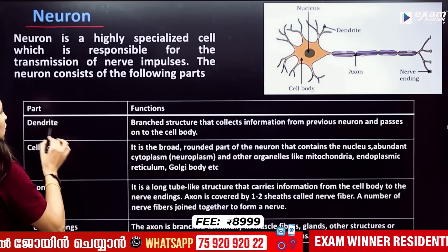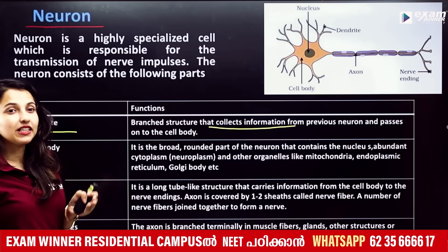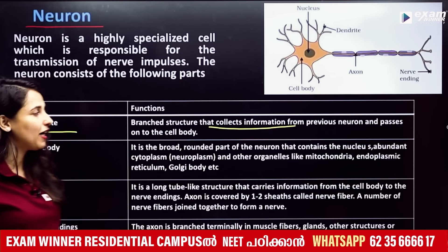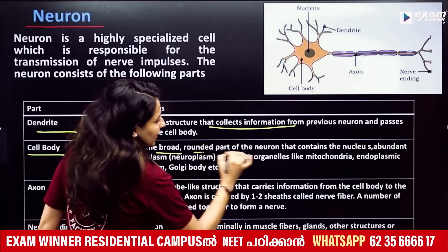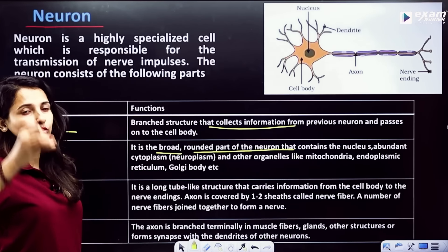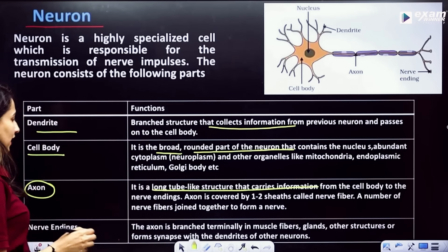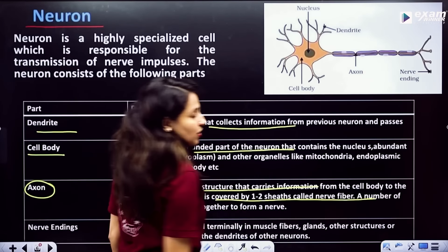The dendrite is the branched structure of the neuron. The cell body is the broad, round part of the neuron containing the nucleus, cytoplasm, and cell organelles. The axon is the long fiber from the cell body. The axon is covered by a myelin sheath formed by Schwann cells. At the end are the nerve endings, which branch into axon terminals called synaptic knobs.